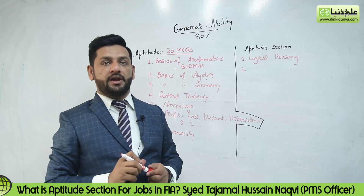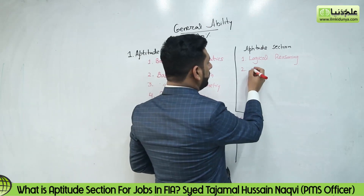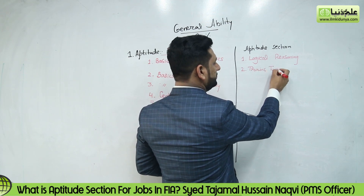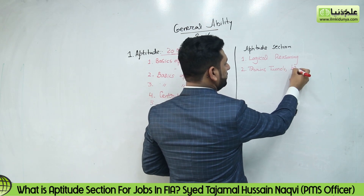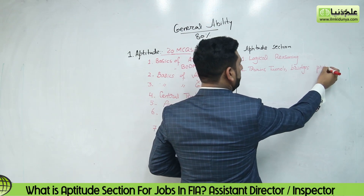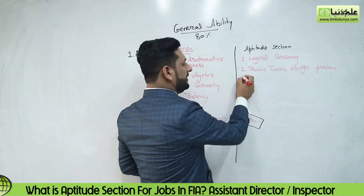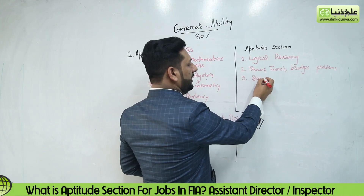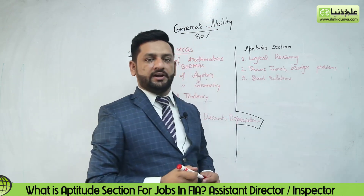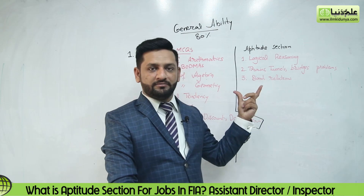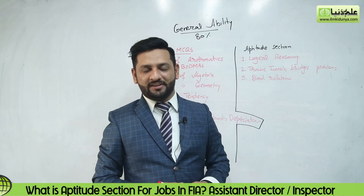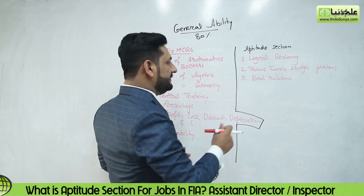The second thing that will come after Logical Reasoning is: Trains, Tunnels, Bridges problems. Number 3 will be Blood Relations — that type of question where you are asked about family relationships like someone's grandmother's sister's mother's father. These are called Blood Relation tests, and these are things you can very easily solve.